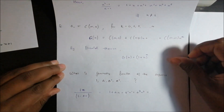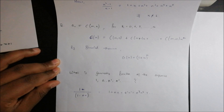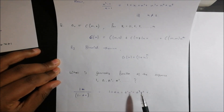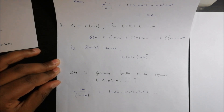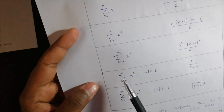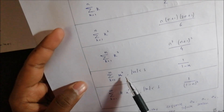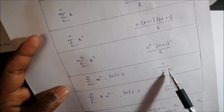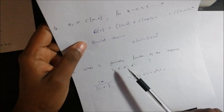Third question: what is the generating function of the sequence a, a², a³, and so on? We know that summation of k equals 0 to infinity of x^k, where x < 1, has closed form 1 upon 1 minus x.